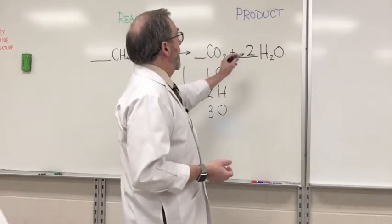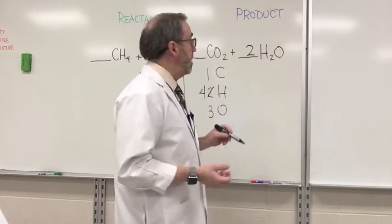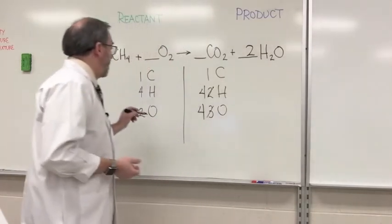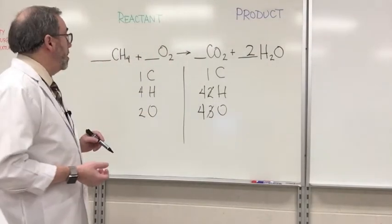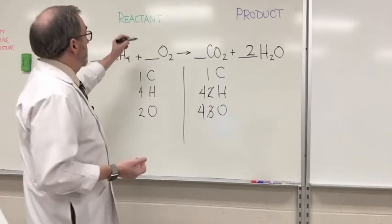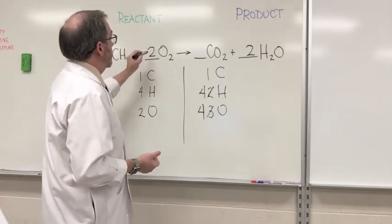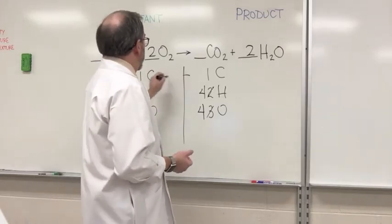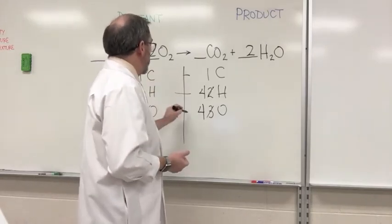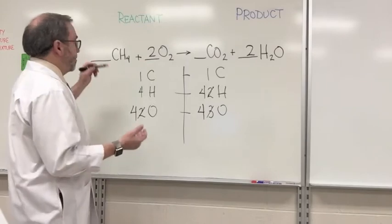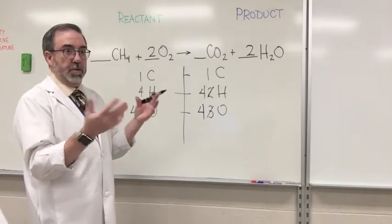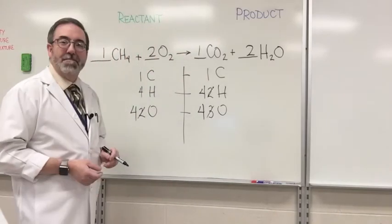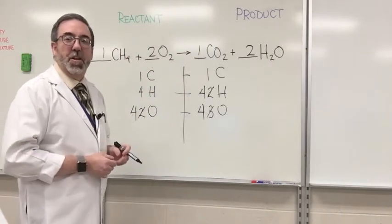So we've got two here, and then two times one would be two. So we've got four over here now, and then we only have two over here. So what are we going to have to do? Well, put a coefficient here of two. So two times two is four. This is balanced, this is balanced, this is balanced. And just for the sake of putting numbers in, do this and do this. Pretty easy.